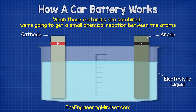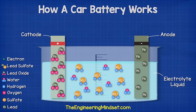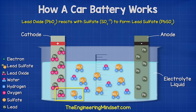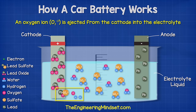When these materials are combined we get a chemical reaction between the atoms. The positive cathode terminal of lead oxide is going to react with the sulfate in the electrolyte. This will form a layer of lead sulfate on the cathode terminal. During this reaction an oxygen ion is ejected from the cathode and into the electrolyte.